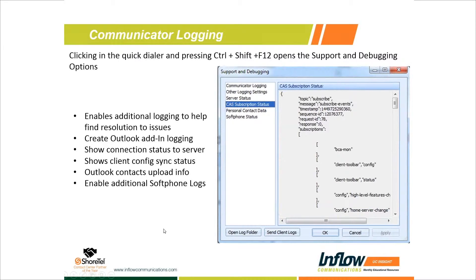The CAS Subscription tab controls all the configuration of the Communicator client. It shows timestamps and lists through different toolbars — if you have toolbars pushed, this shows what's syncing from the server. You can look through the status to see if the toolbars and configurations being pushed to this user are working correctly.